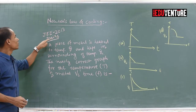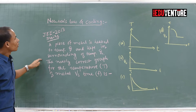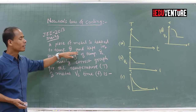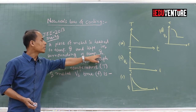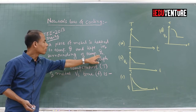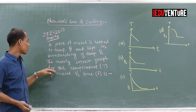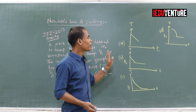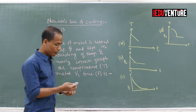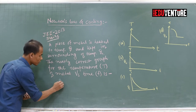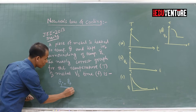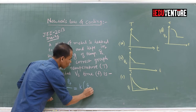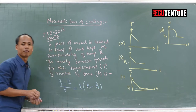In 2013, a JEE Main question asked: a metal body is heated up to temperature theta and kept in surroundings at temperature theta-naught. Identify the nearly correct graph for temperature T of the metal versus time. To solve this, we use the result that rate of cooling equals K times (theta-body minus theta-surroundings), which can be written as dT/dt proportional to delta T.